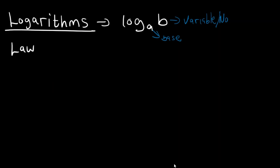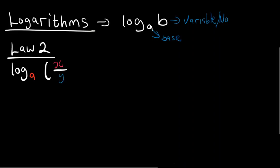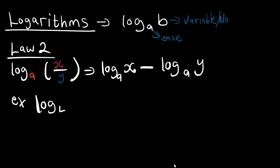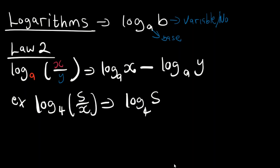Law number two of logs is log base A with X over Y. To expand this, we'll have log base A of X minus log base A of Y. An example will be log of base 4 of 5 over X. To expand, we'll have log of base 4 of X.